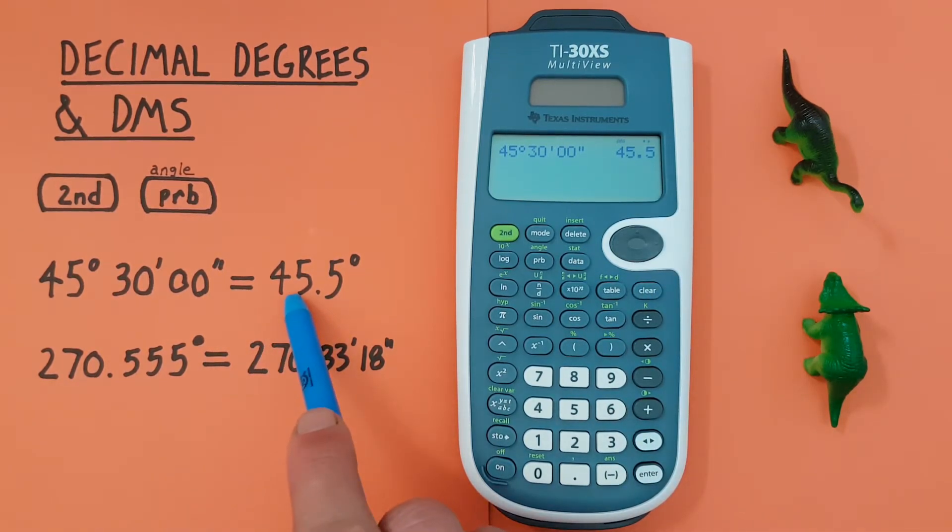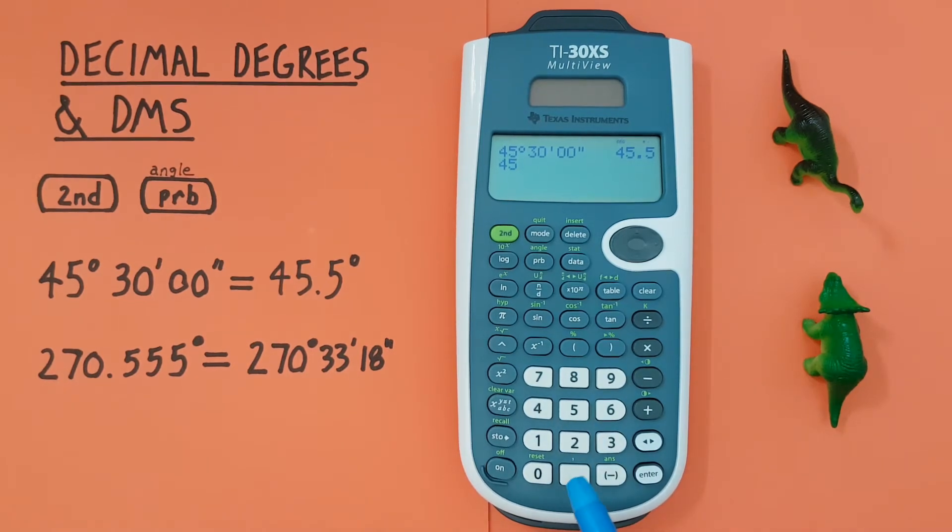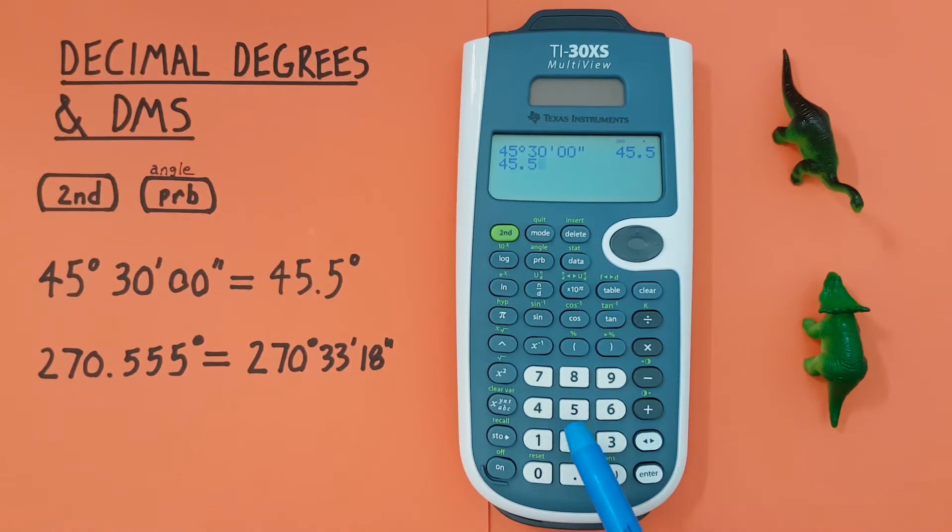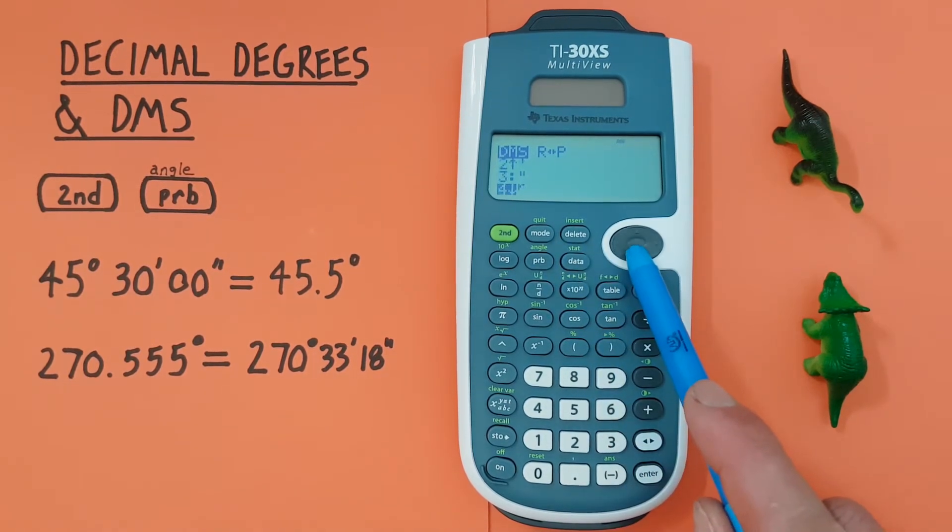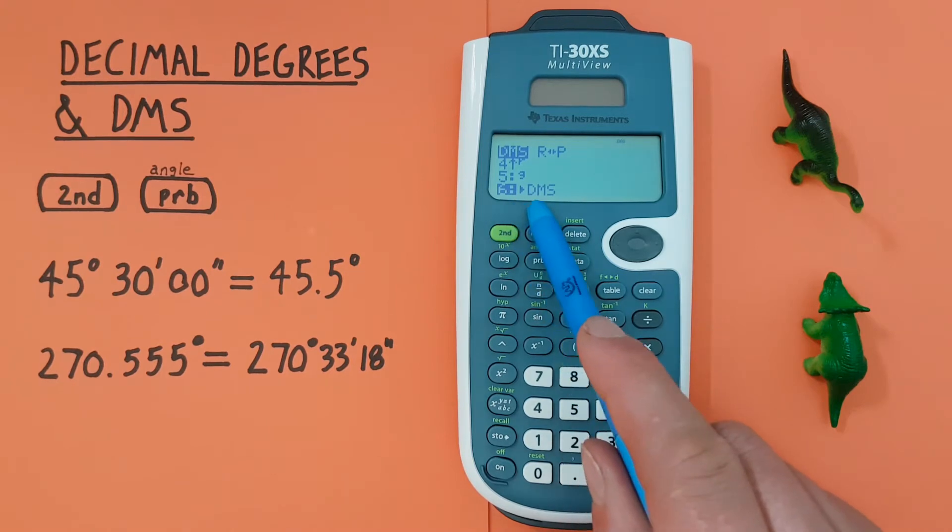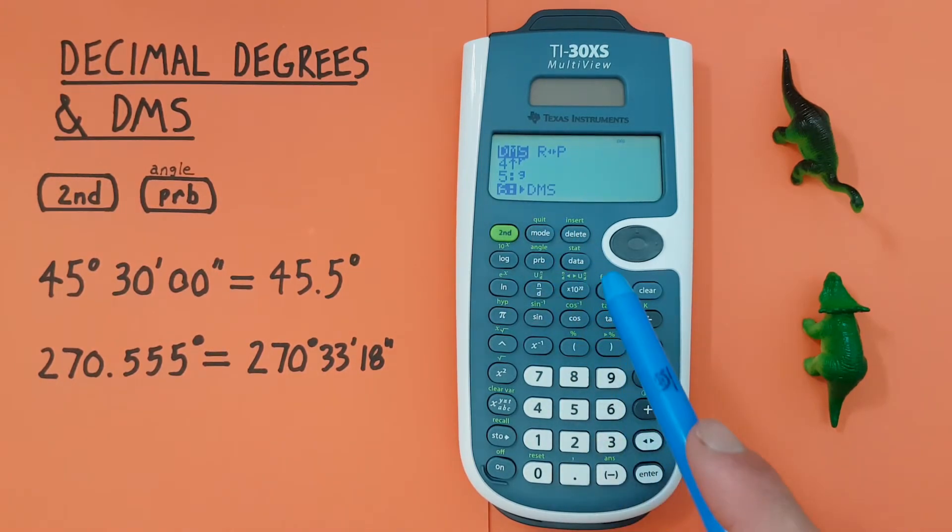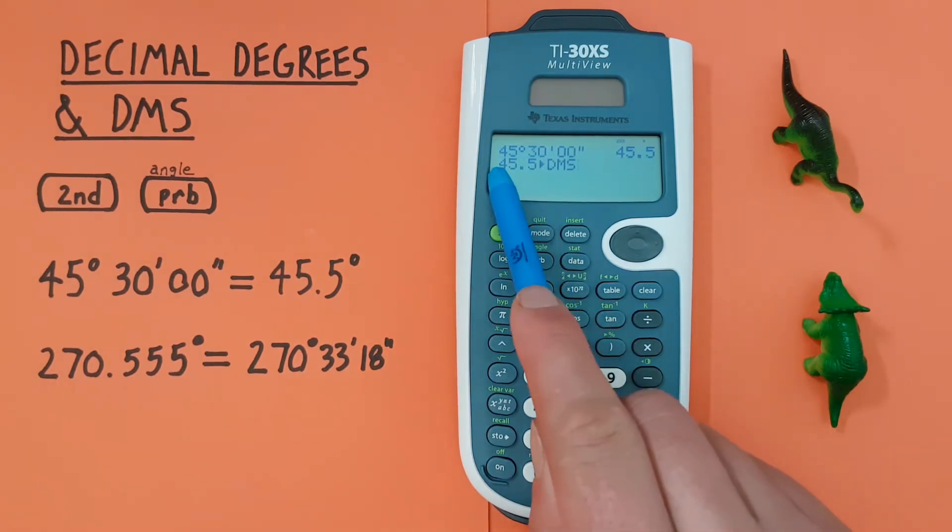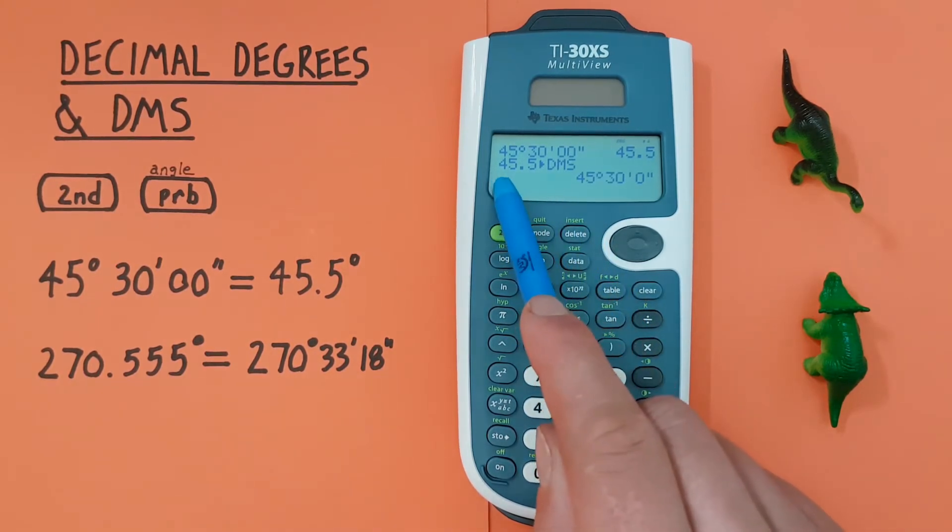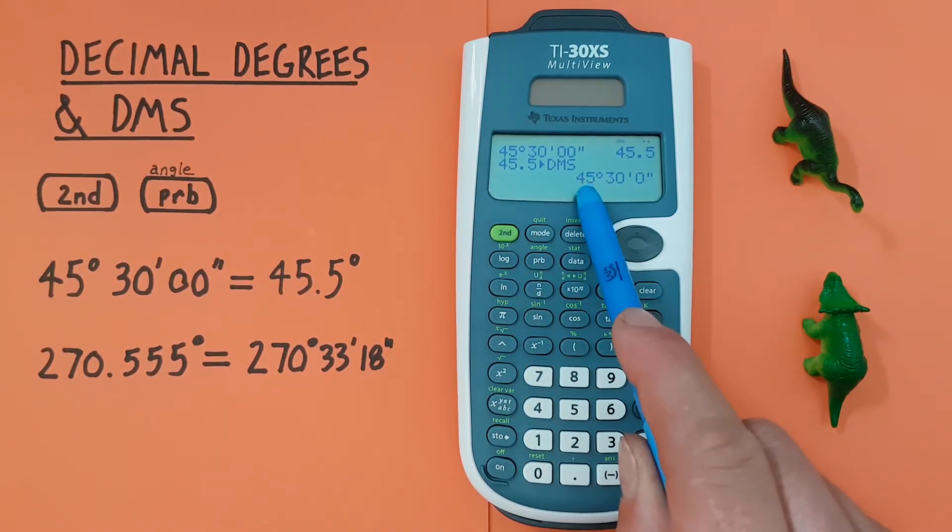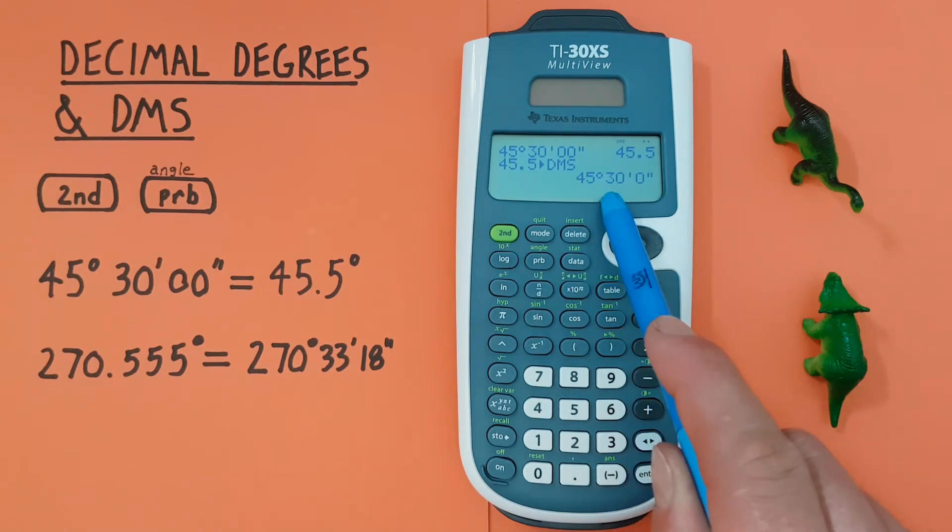What if we were given 45.5 decimal degrees and wanted to convert that to degrees, minutes, seconds? Well we can do that by entering the 45.5 on our calculator, going back to our menu and then if we scroll all the way down to number six here we have an into DMS function and you can either press enter or choose number six so that you get this on your screen and then press enter again and you see our 45.5 decimal degrees has converted to 45 degrees, 30 minutes, zero seconds.